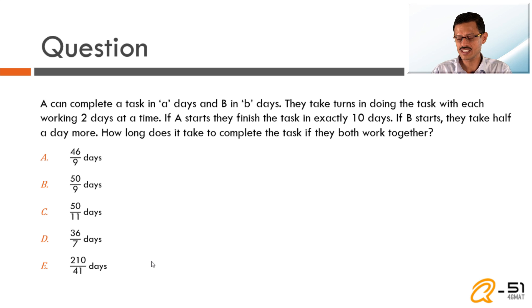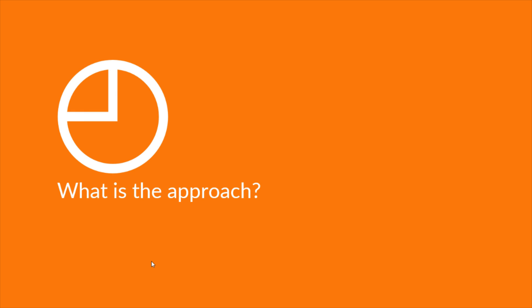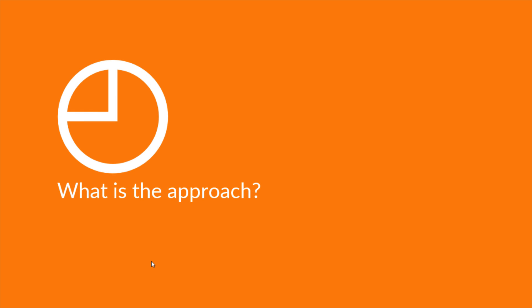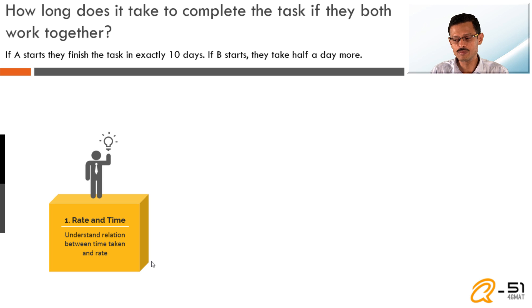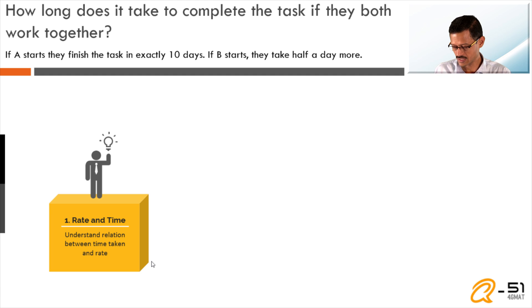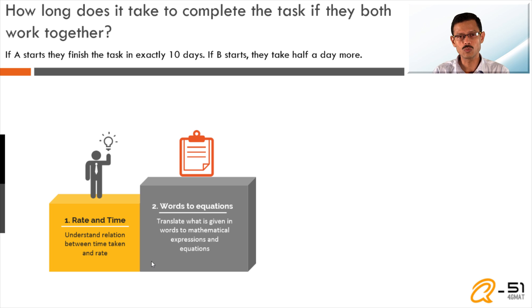Scanning the answer choices, none of them is an integer, so there is some calculation involved. The approach is broken into four steps. Step one: understand the relation between time taken and the rate of work done. Step two: use that to translate the words given into mathematical expressions and frame equations.